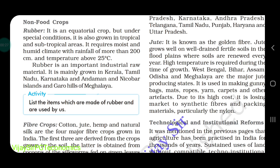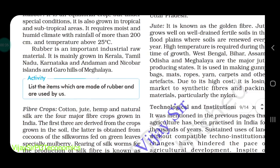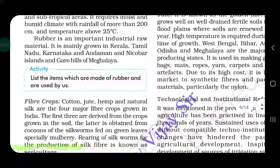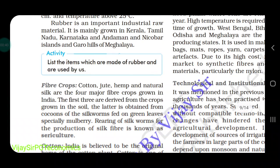The temperature required is about 25 degrees Celsius. Rubber is an important agricultural raw material. It is mainly grown in Kerala, Tamil Nadu, Karnataka, Nicobar Islands, and Garo Hills of Meghalaya. As you can see in the pictures, rubber also comes from trees.